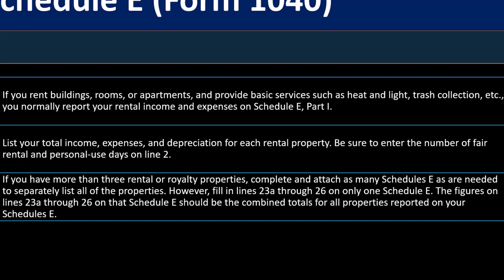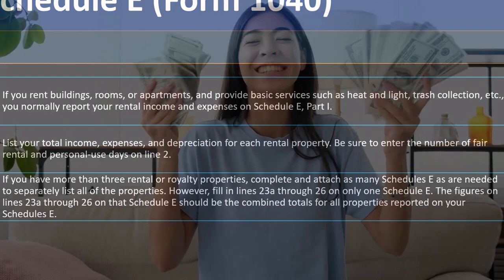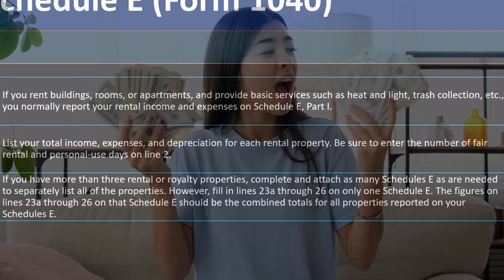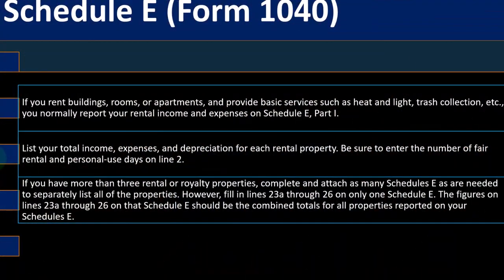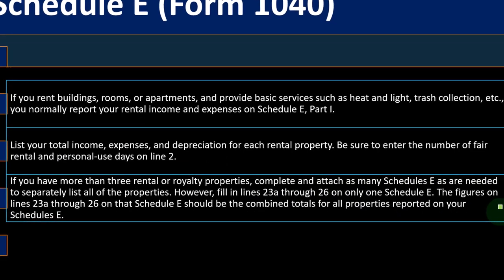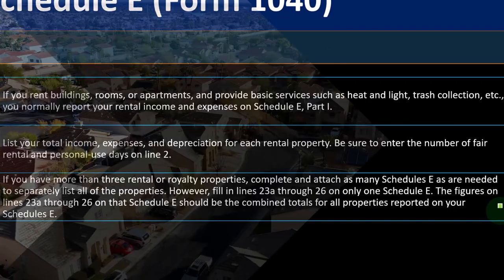If you had one property with income and another with a loss, you report them separately, but when you net them together you might have net income and not be subject to any loss limitations. You can generally net out two properties that are both passive in nature. The question is whether you can take losses against other income like W-2 income. The figures on lines 23A through 26 on Schedule E should be the combined totals of all properties reported on your Schedule E.